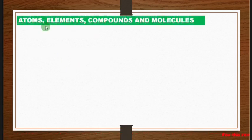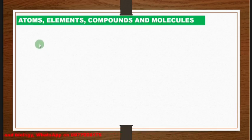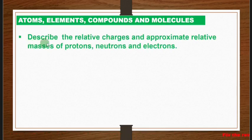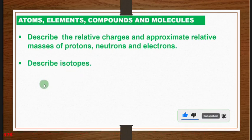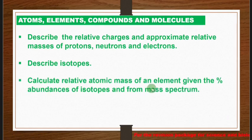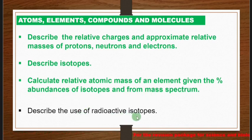Next is atoms, elements, compounds, and molecules, which is highlighted in green. Under this topic, you need to describe the relative charges and approximate relative masses of protons, neutrons, and electrons. You also need to describe isotopes, calculate the relative atomic mass of an element given the percentage abundances of isotopes, interpret data from a mass spectrometer, and describe the uses of radioactive isotopes.